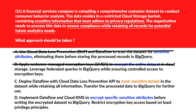Option C says mask sensitive details. Masking sensitive data using Cloud DLP ensures privacy while keeping the dataset intact for future analytics. We have different types of masking — dynamic data masking and static data masking — so this meets the requirement. Option D says encrypt specific sensitive attributes, but like option B, encrypting specific attributes adds protection but complicates usability for analytics without decryption. So option D is incorrect. We'll lock option C as the right answer.